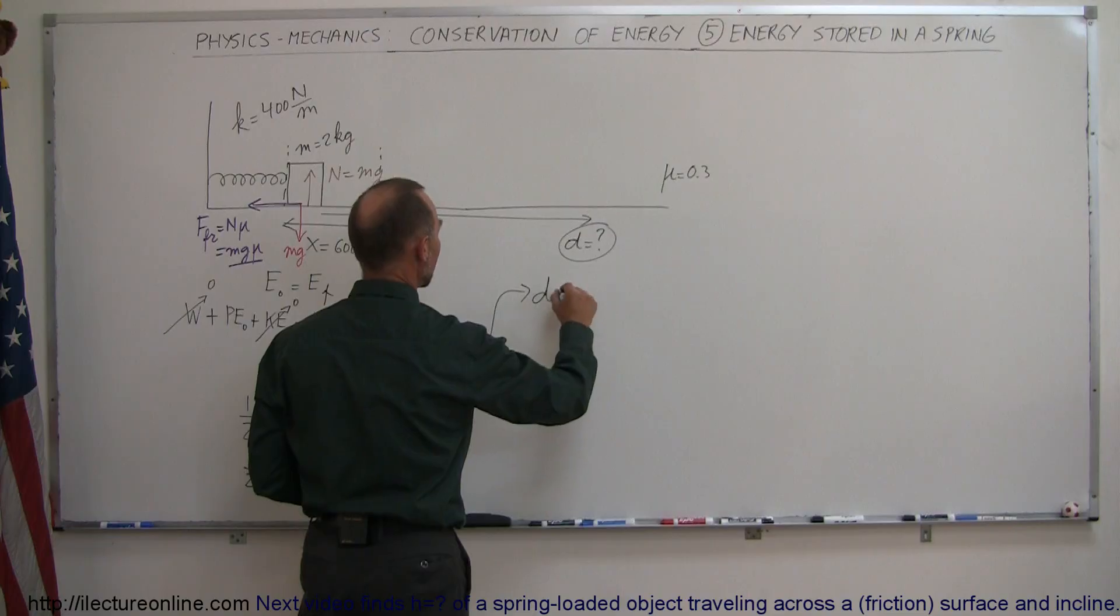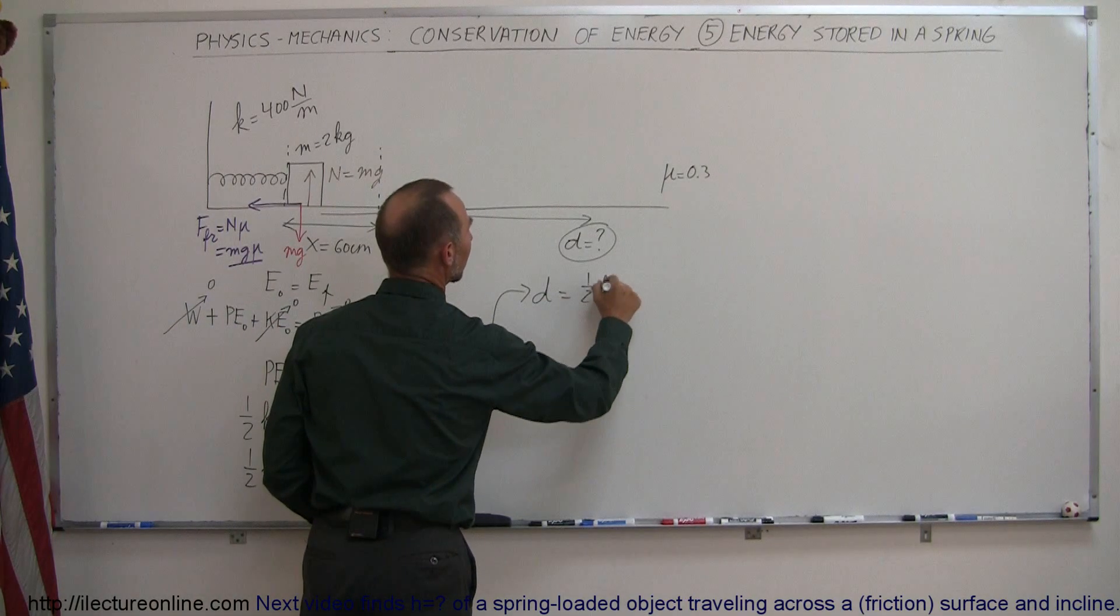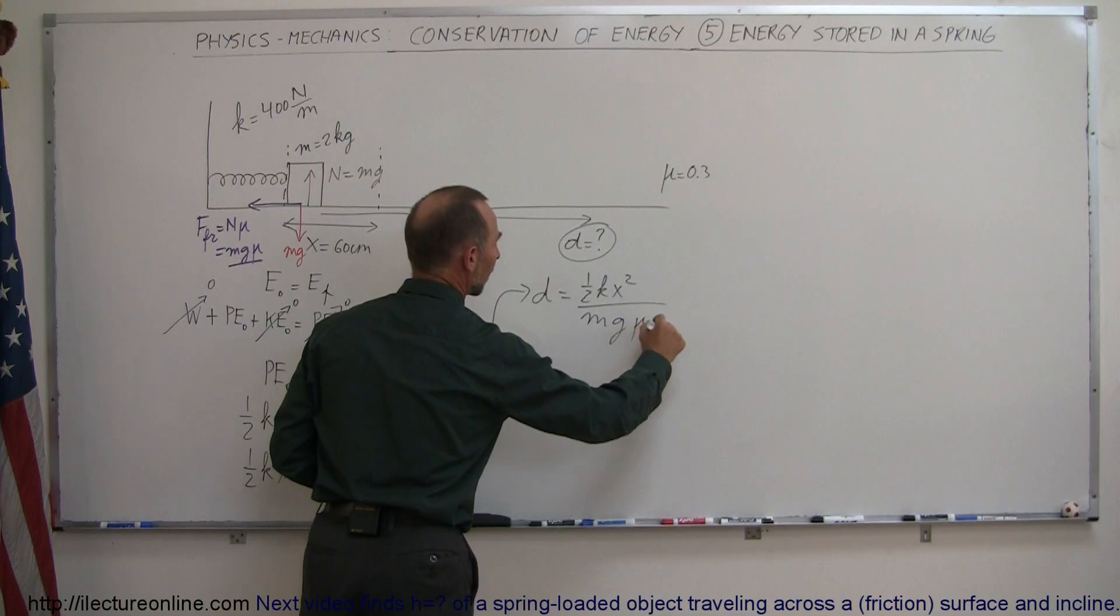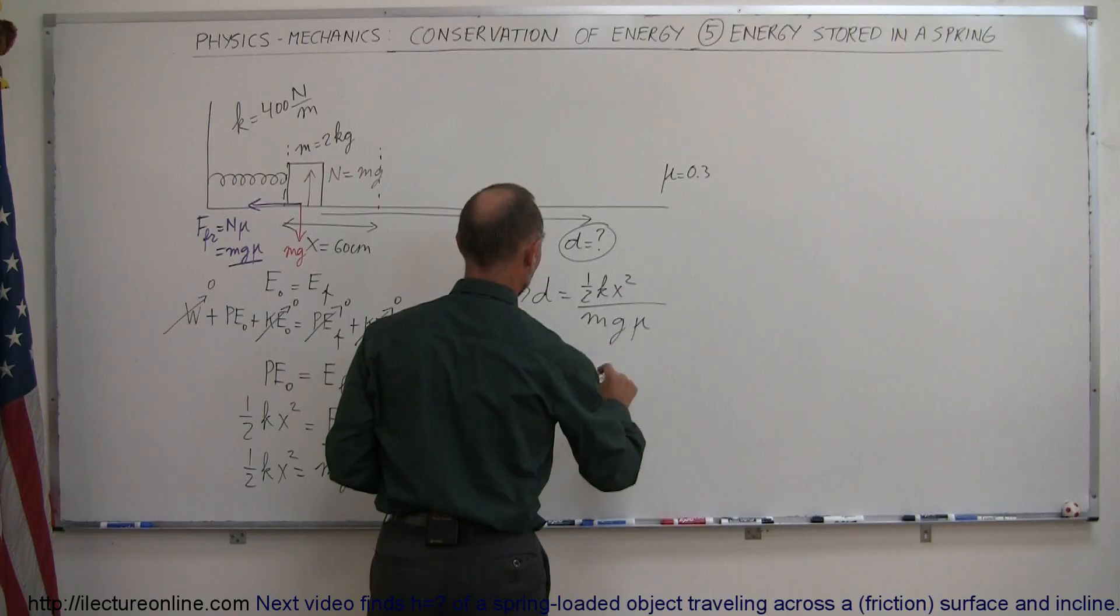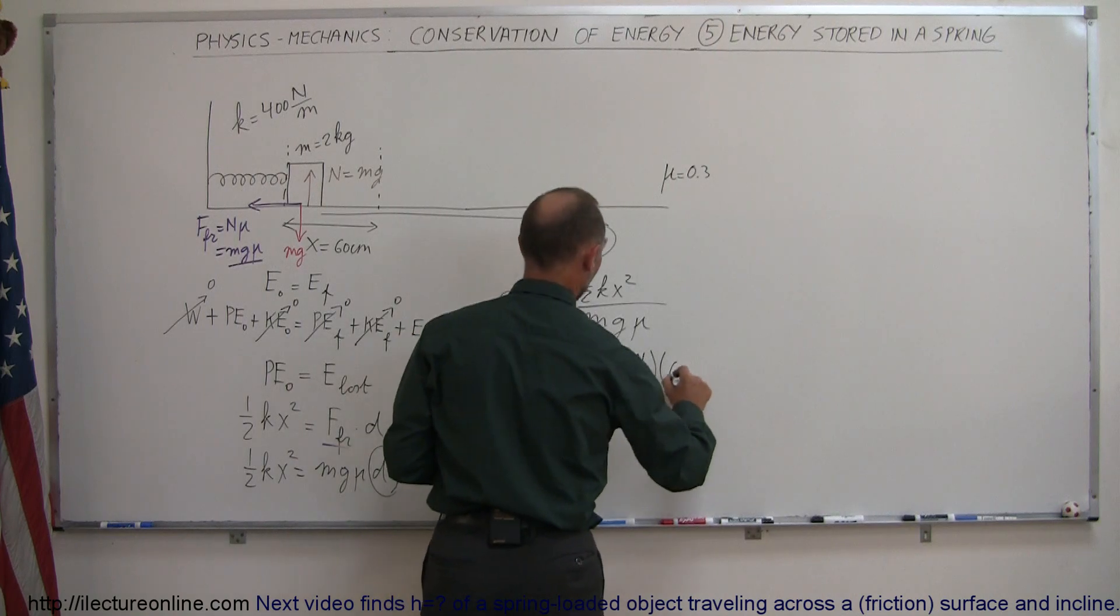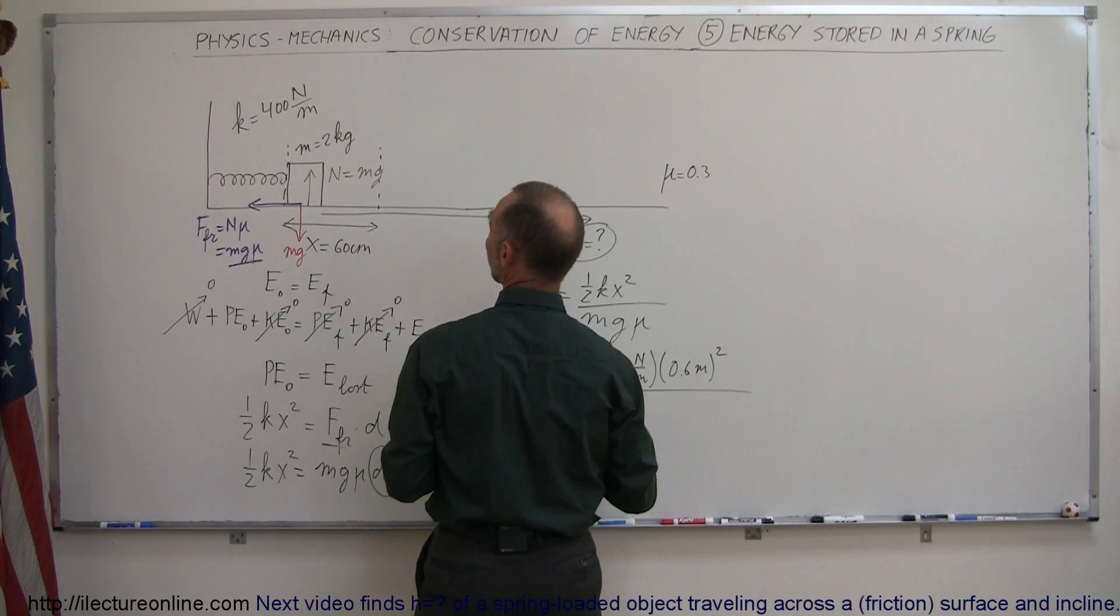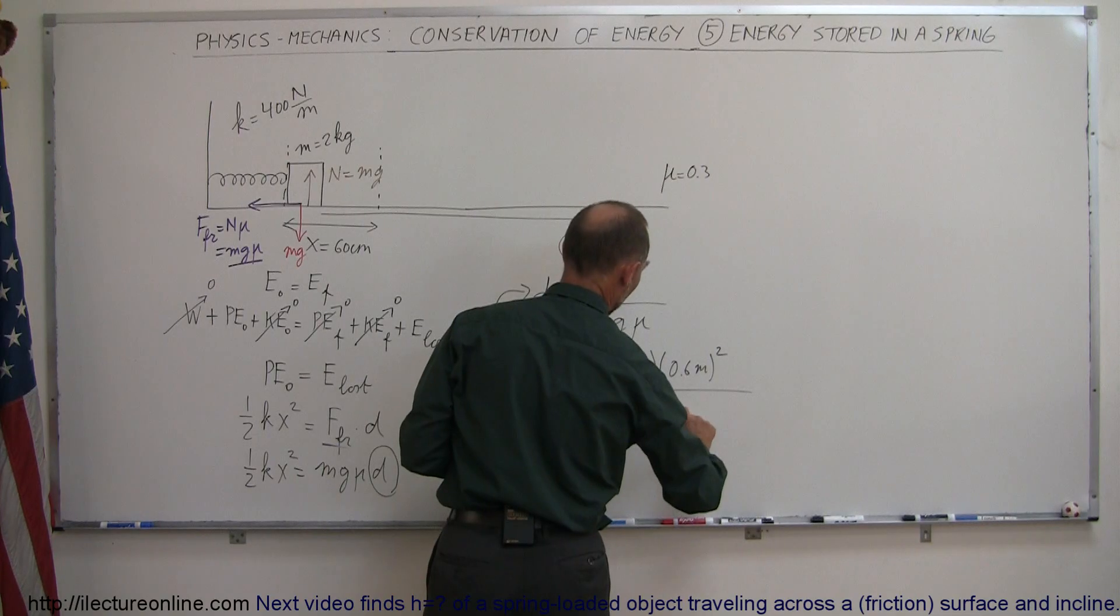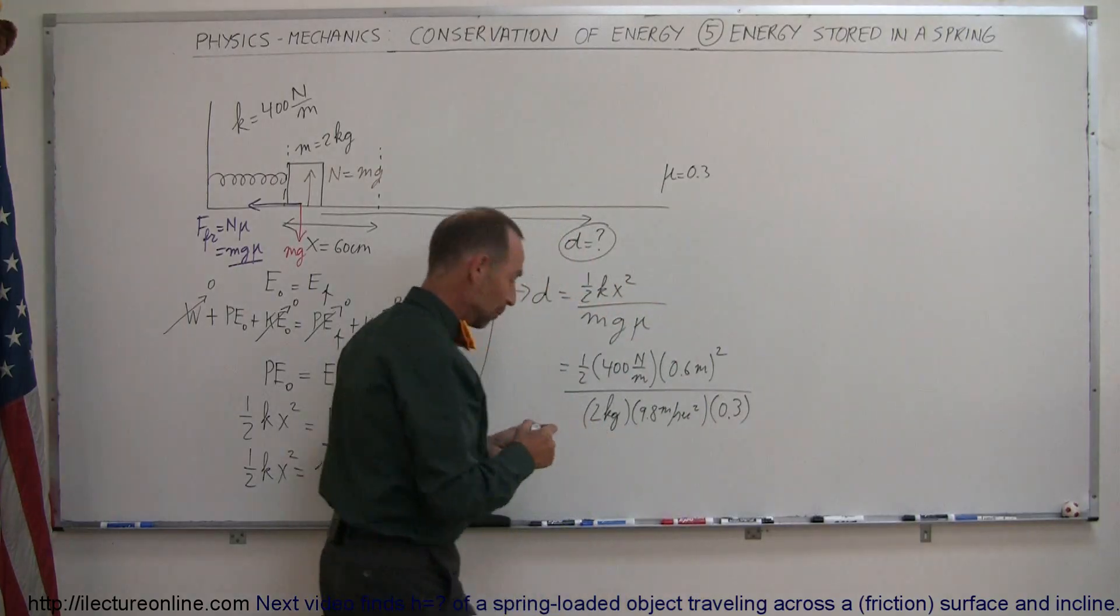So when we write it over here, we can say that d is equal to one-half k x squared divided by mg mu. And all we have to do is plug in the values that we have. So this is equal to one-half times k, which is 400 newtons per meter, the distance is 0.6 meters and we have to square that, and divide the whole thing by the mass which is 2 kilograms, times g which is 9.8 meters per second squared, times mu which was 0.3.